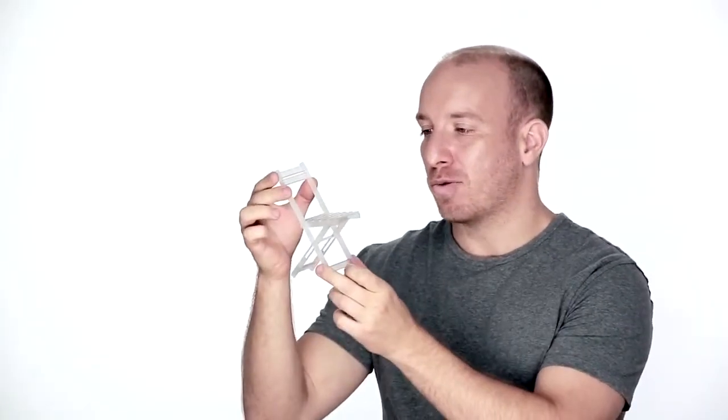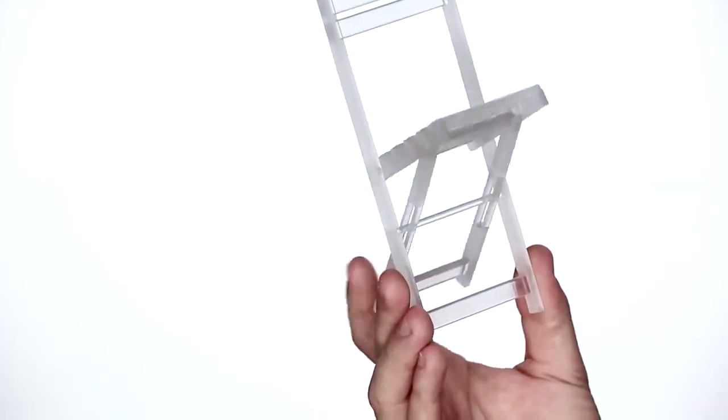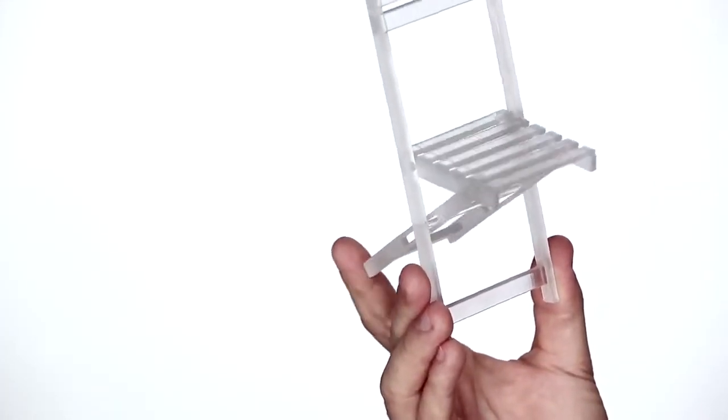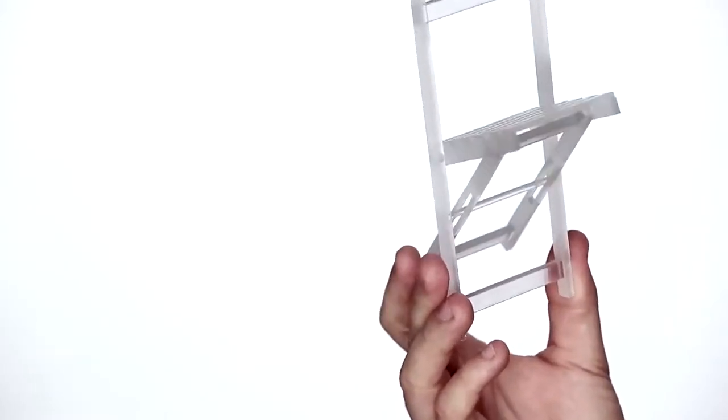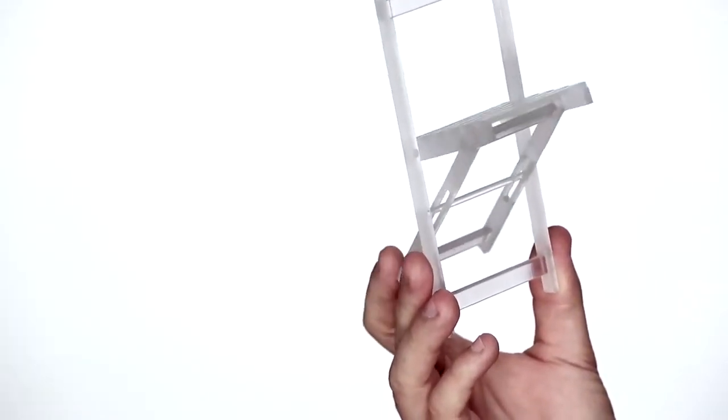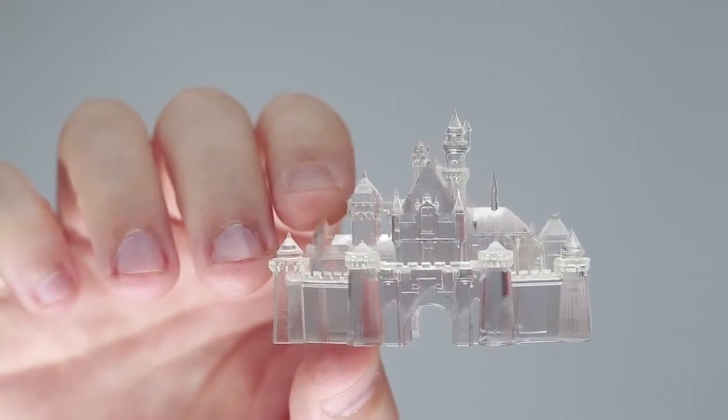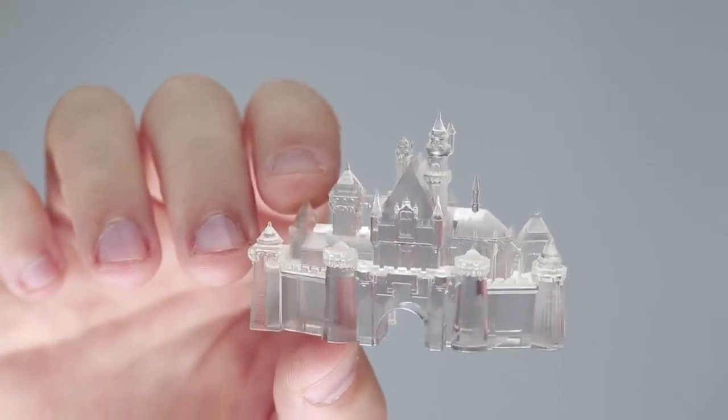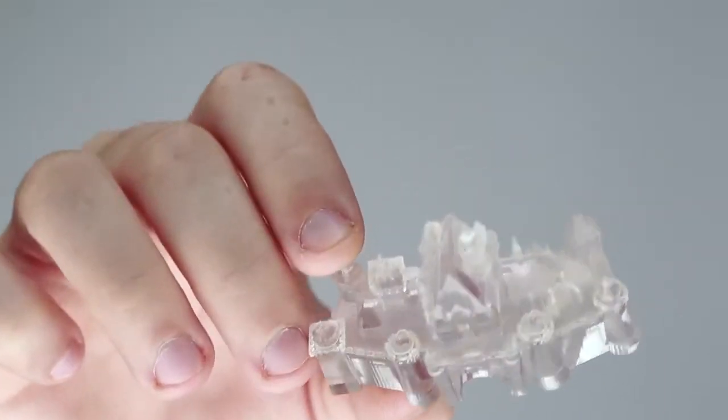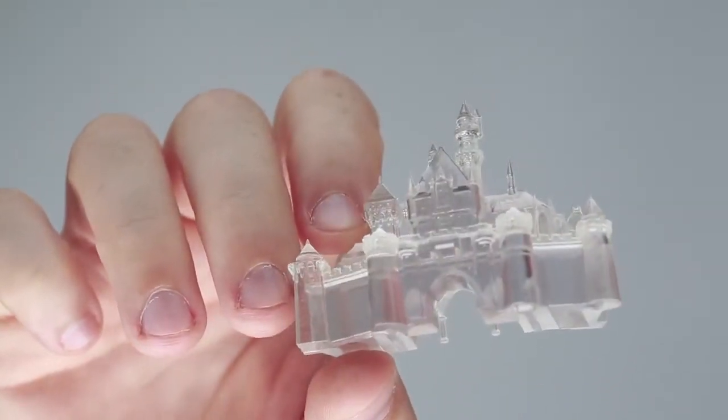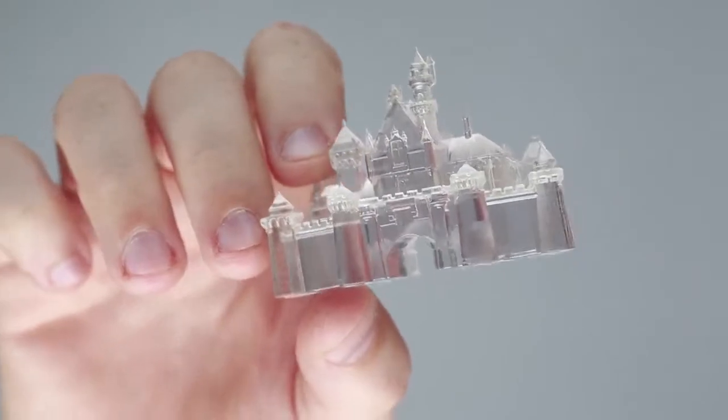Another example that I have is this 3D printed folding chair. The VeroClear material because of its transparency is excellent when you need to produce a nice polished finish. An example of that is this castle which features a very nice gloss finish to the surface and you've got details here that go down to below one millimeter in thickness such as these turrets.